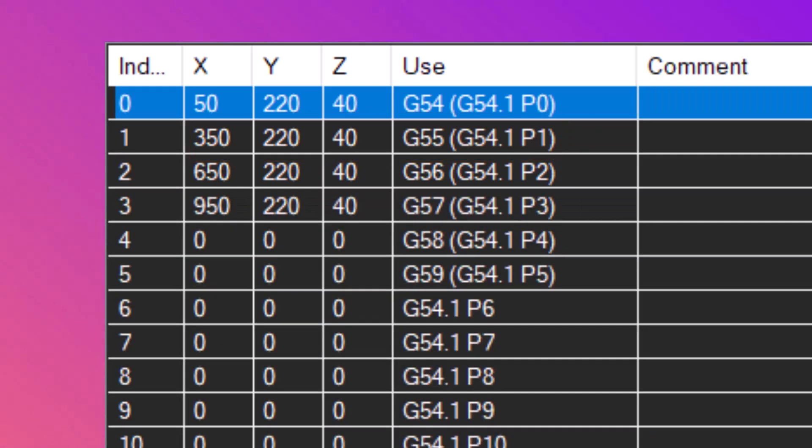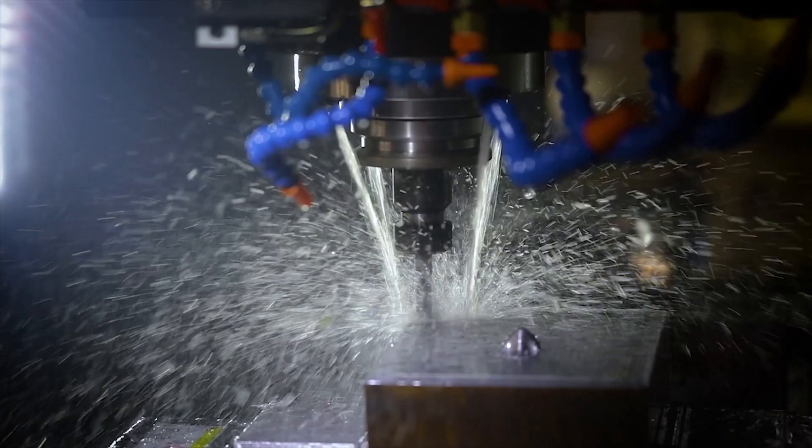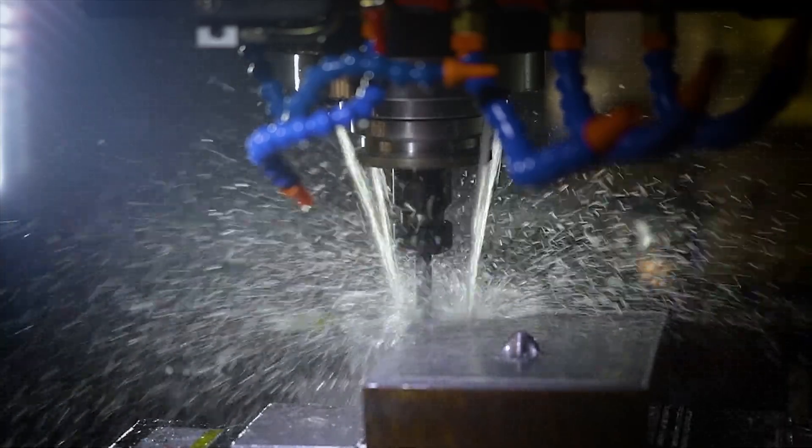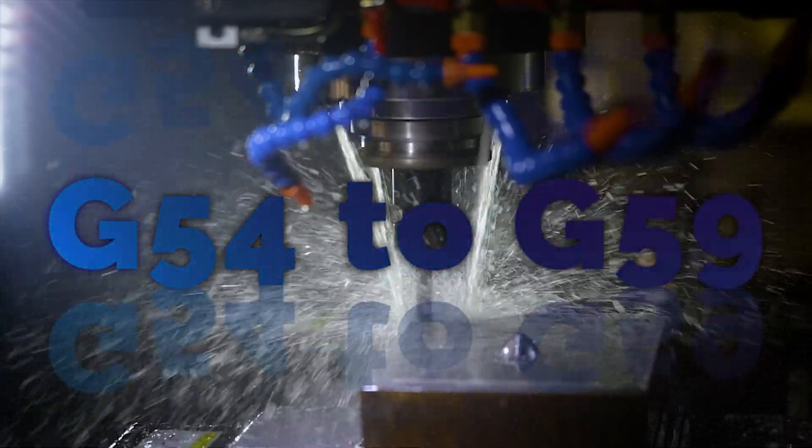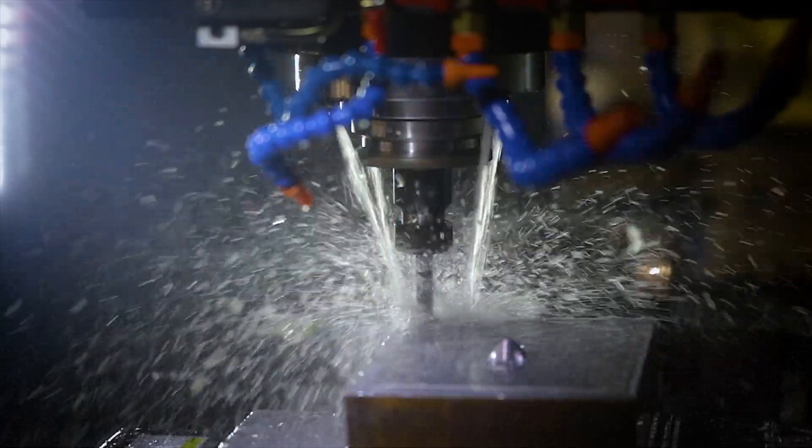Using work offsets effectively can dramatically increase the flexibility and productivity of your CNC operations. Remember, G-54 to G-59 give us the power to define up to six different workspaces. Make good use of them.